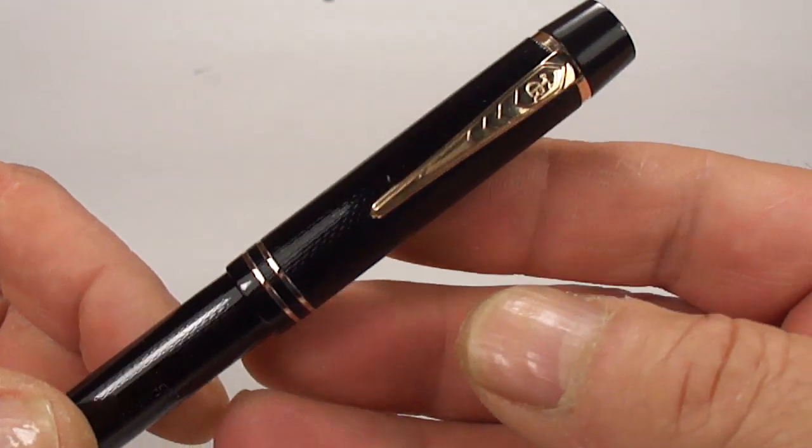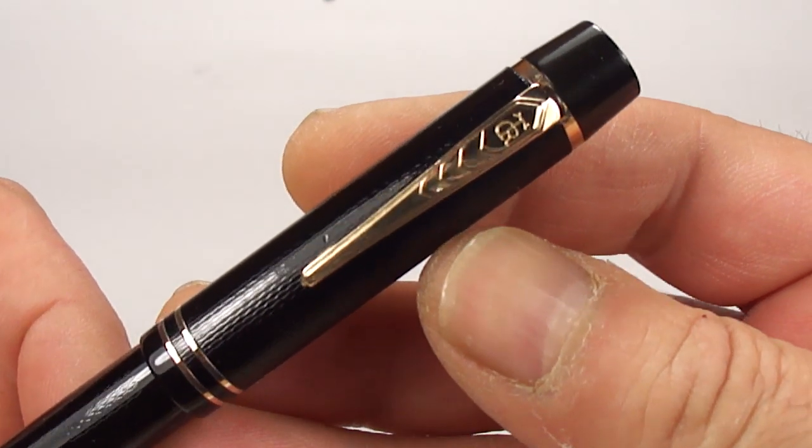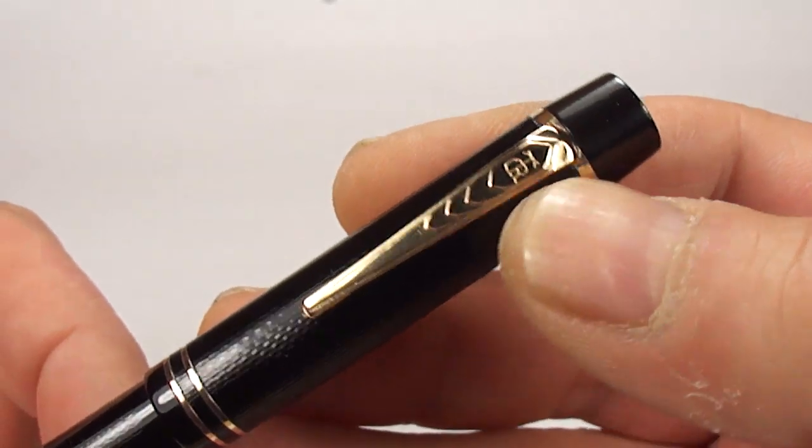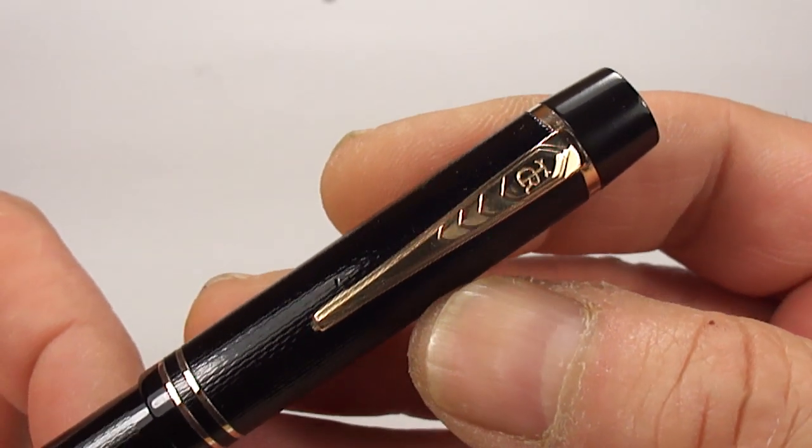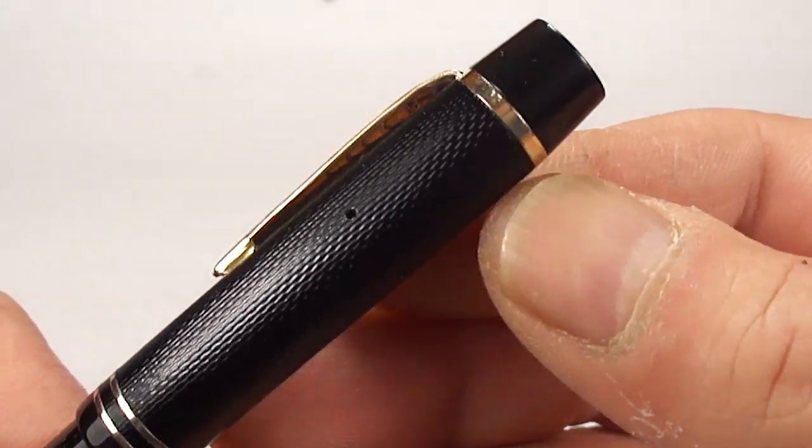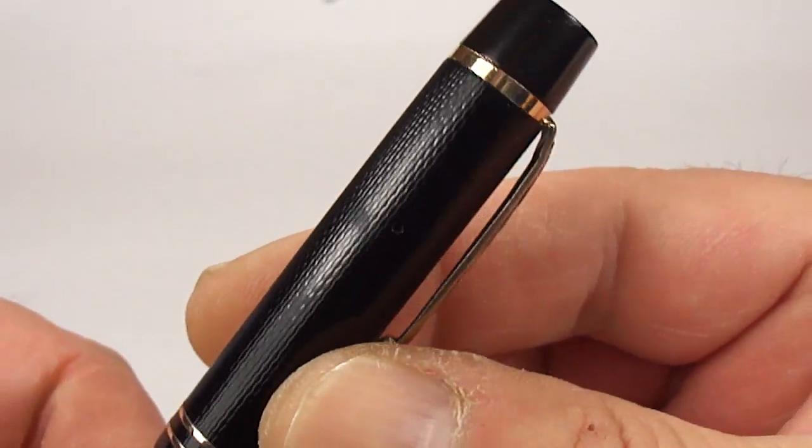And if we show you the top there, you can see it's got the very recognizable Chevron Onoto Thomas Delarue symbol to the top of the clip there. And you can see the clip ring goes around the top of the cap there.